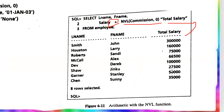In the previous class, you saw an example where commission values had null values — you would see empty data. That empty data has been replaced using this NVL function.